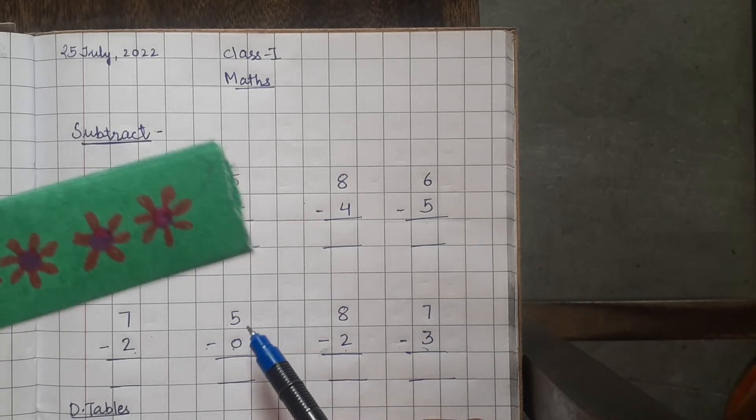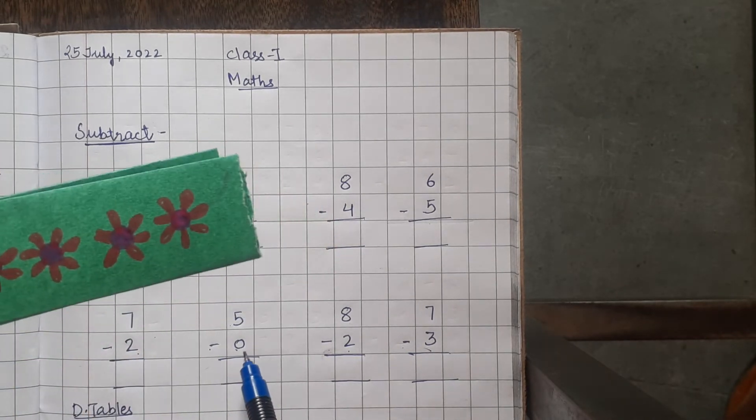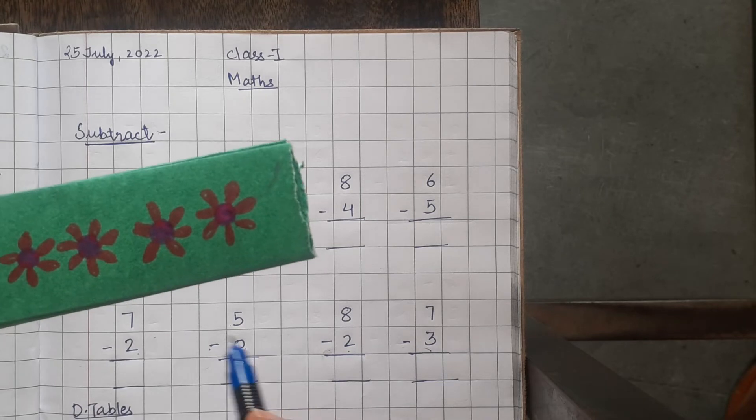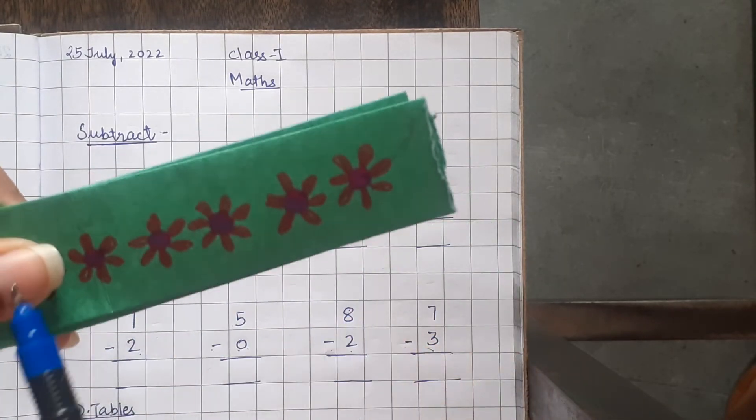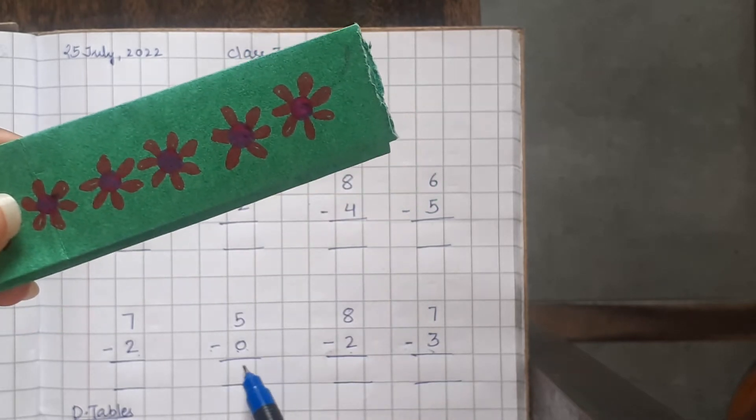Here, we have 5 flowers. So, 1, 2, 3, 4, 5 and we have to take away 0. 0 means nothing. We have to take nothing away. So, 1, 2, 3, 4, 5, 5 will be left.